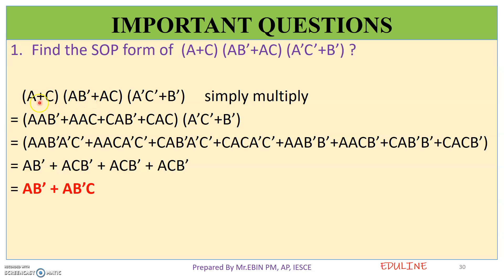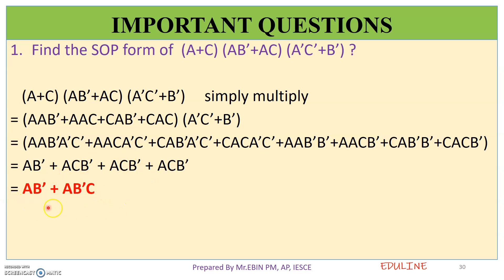We multiply: AAB̅ plus AAC plus CAB̅ plus CAC. That is one term. We multiply that two times, then multiply again. So we do this one time — this is redundant, it is duplicate. We finally get the answer: AB̅ plus AB̅C. That is why we move it into the SOP formula.